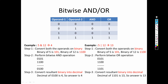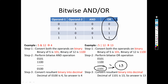Now bitwise OR is almost similar. Step 1: convert the decimal numbers into binary. Step 2: perform the bitwise OR operation using the OR truth table, where OR works like addition. So 1 + 0 = 1, 0 + 0 = 0, 1 + 1 = 1, and 0 + 1 = 1, giving us 1101 in binary. Step 3: convert this binary number into decimal, which gives 13. That is your final answer.